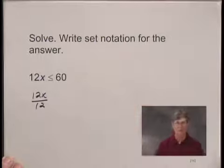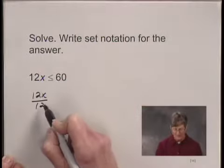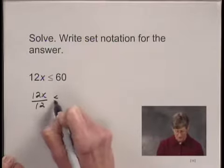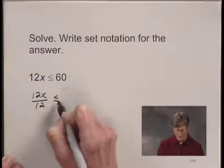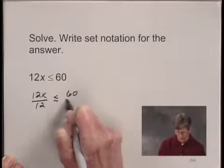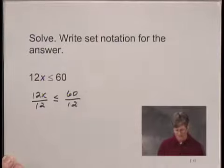The multiplication principle for inequalities says that if I divide both sides of an inequality by a positive number, I don't change the sense of the inequality. So I can write the inequality symbol still as less than or equal to, because I'm dividing by the positive number 12 on both sides.